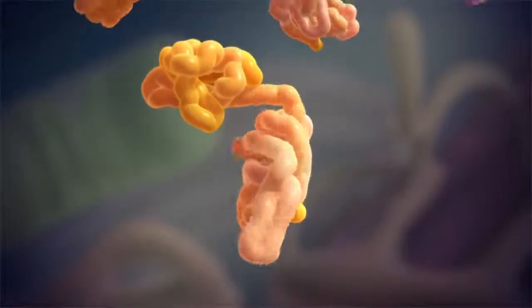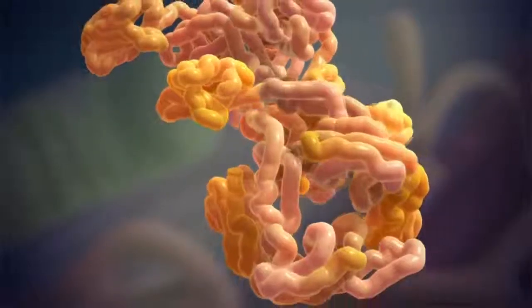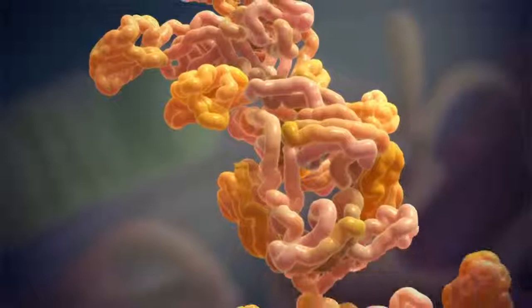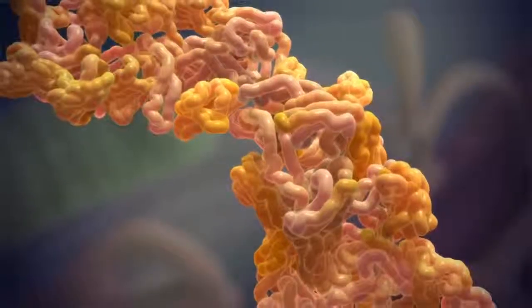Instead of attaching to heavy chains, the abnormal light chains open up and bind to other abnormal light chains to form amyloid fibrils. These gradually build up over time.